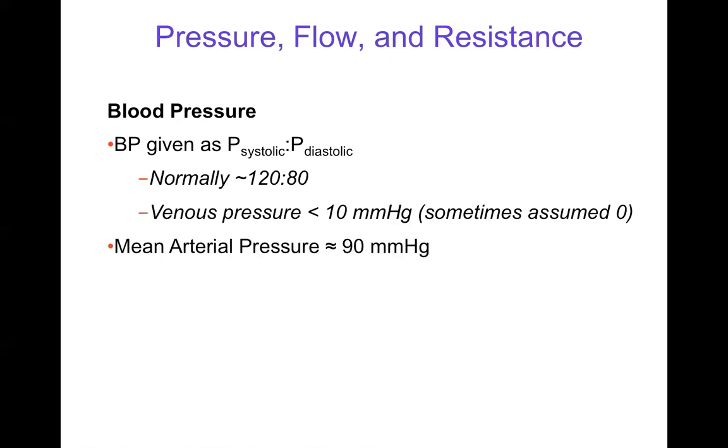Venous pressure is assumed to be zero. Mean arterial pressure is around 90 millimeters of mercury. This is averaged over the cardiac cycle, and so it's usually estimated as one-third systolic pressure and two-thirds diastolic, since the systolic phase is shorter than the diastolic phase.